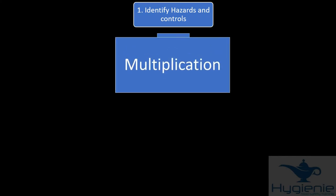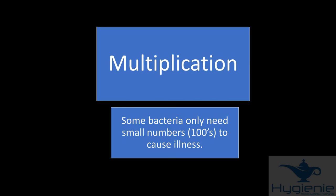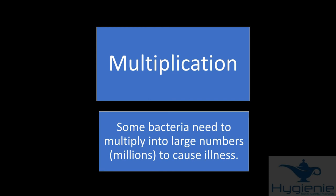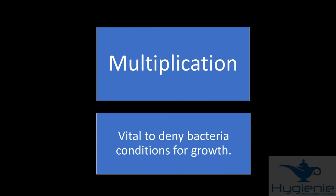Next we'll take a look at multiplication. Some bacteria need only very small numbers, hundreds, to cause illness. Therefore it's vital to prevent all contamination. Some bacteria need to multiply in large numbers, millions, to cause illness. It is vital to deny bacterial conditions for growth.